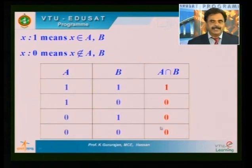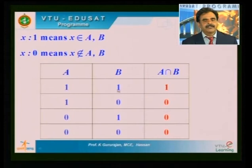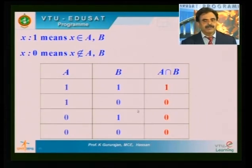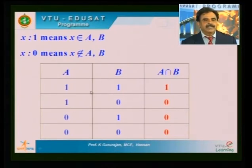In the membership table for intersection, only when X belongs to A and X belongs to B is X expected to be in A intersection B; otherwise it is not. So for A intersection B, 1,1 gives 1; otherwise it is always 0. We can find the contrasting behavior: for union, 0,0 gives 0 otherwise 1; for intersection, 1,1 gives 1 otherwise 0.